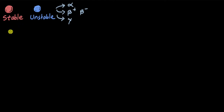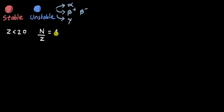For lighter nuclei — nuclei with atomic number less than 20 — the ratio of neutrons to protons, n/z, is equal to 1. This means that for atoms with atomic number less than 20, the nucleus contains equal numbers of neutrons and protons.